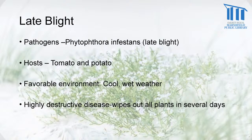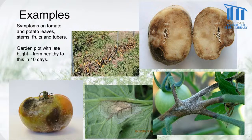Late blight — early blight and late blight don't necessarily occur early or late in the summer; either one can occur at any time. This is a really serious disease affecting tomatoes and potatoes. The environment is cool, wet weather. It's highly destructive and can wipe out all the plants in a row or in a field in a matter of a week.